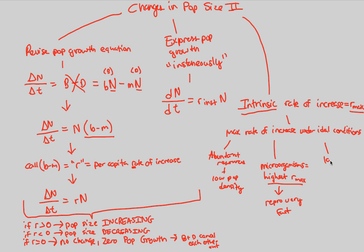Larger organisms have a lower r-max because they take longer to reproduce, so their maximum rate is obviously lower. This is an ideal, perfect-world scenario of abundant resources and low population density. Once r-max has been reached, you can insert r-max into the equation delta N over delta T equals r × N, and you will get a change in population size based on r-max.